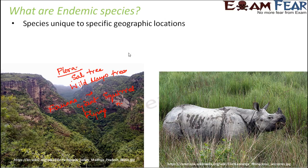Similarly, if you talk about Kaziranga National Park, in terms of the flora, you have the elephant grass and the marshland, which are endemic species of Kaziranga National Park. And if you talk about the fauna, the Indian rhinoceros, swamp deer, wild water buffalo, and a high density of tigers — these are parts of the fauna of Kaziranga National Park.